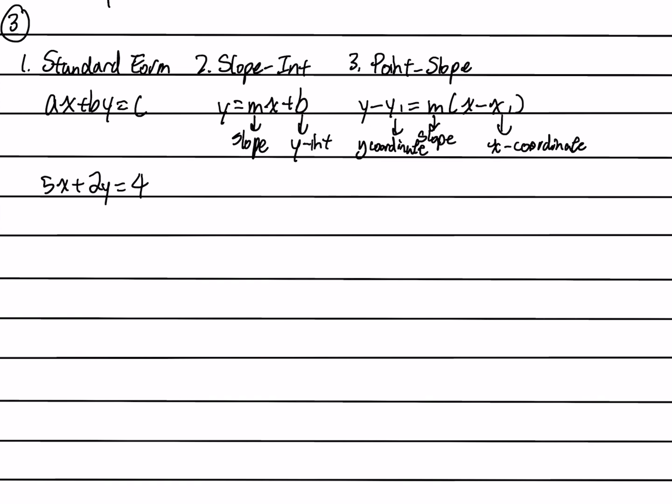Here, how to switch to slope-intercept form from standard form. As you can see from slope-intercept form, you want to isolate y. So in order to isolate y here, you want to move the 5x to the other side. You minus 5x from both sides. So you get 2y equals 4 minus 5x.